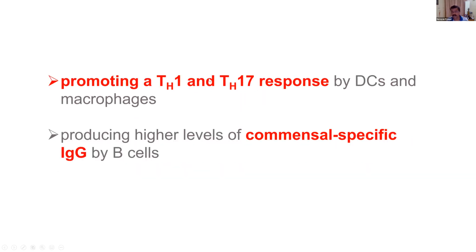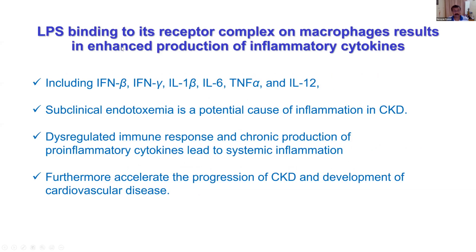This promotes Th1 and Th17 responses by dendritic cells and macrophages, and produces higher levels of commensal cell-specific IgG rather than IgA. Lipopolysaccharides binding to their receptor complex on macrophages results in inflammatory cytokines — TNF-alpha, interferon beta and gamma — causing subclinical endotoxemia. This is thought to be an underlying low level of lipopolysaccharides that is really thought to be higher in CKD patients, causing subclinical inflammation.